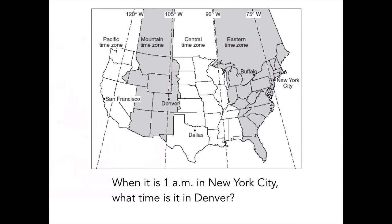We know that New York City is east of Denver, so it's earlier — because it's closer to the Prime Meridian, it's earlier in New York City than it is in Denver. So Denver would have to be a few hours back. How many hours back? You count by lines of longitude. If it's 1 a.m. in the eastern time zone, going back to an earlier time, that would be 12 a.m. Going back one more to the mountain time zone, that would be 11 p.m. So it's 11 p.m. in Denver when it's 1 a.m. in New York City.